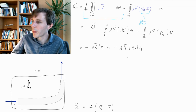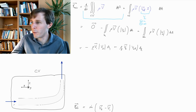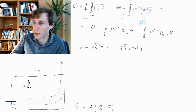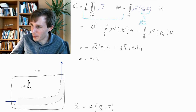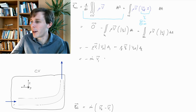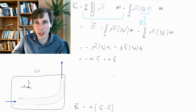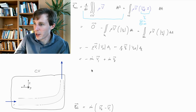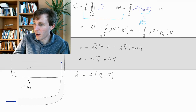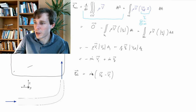We notice that every time we have rho times v_orthogonal times A, this sums up to the mass flow. So we have minus the mass flow multiplied by v1, plus the mass flow multiplied by vector v2. This adds up and sums up to the net force equal to mass flow multiplied by the difference between the outlet and inlet velocity vectors.